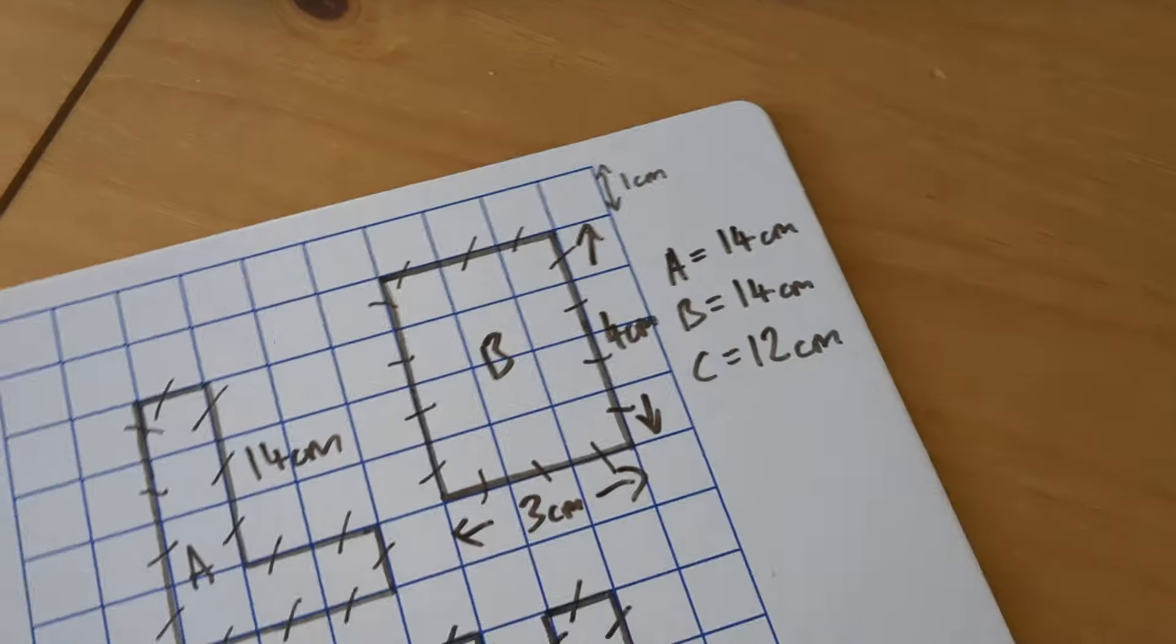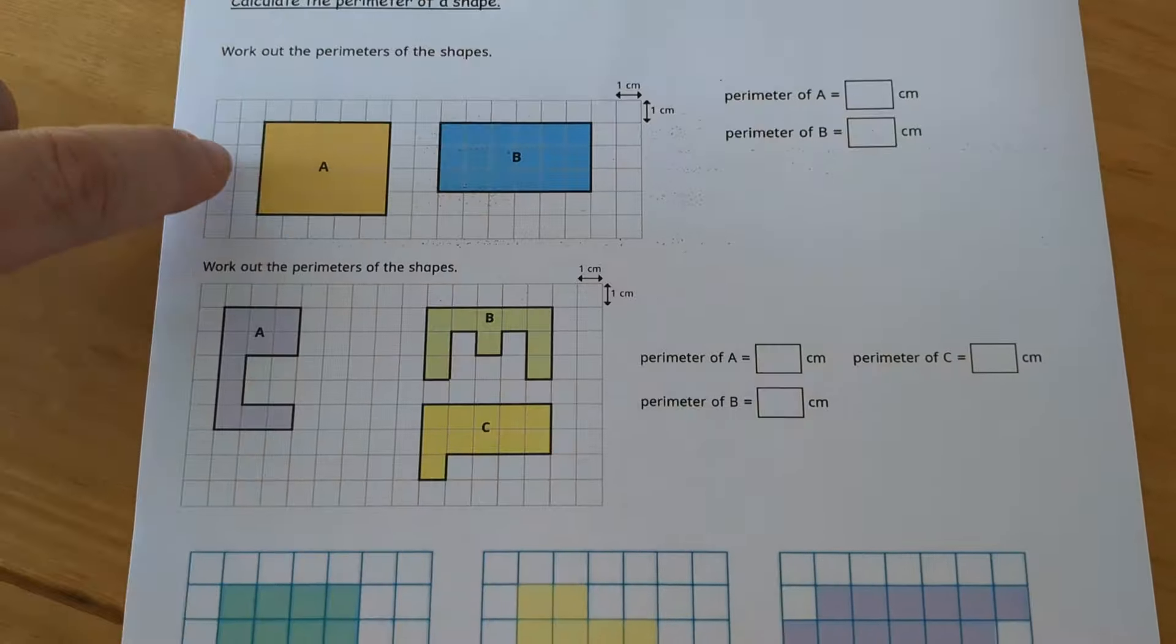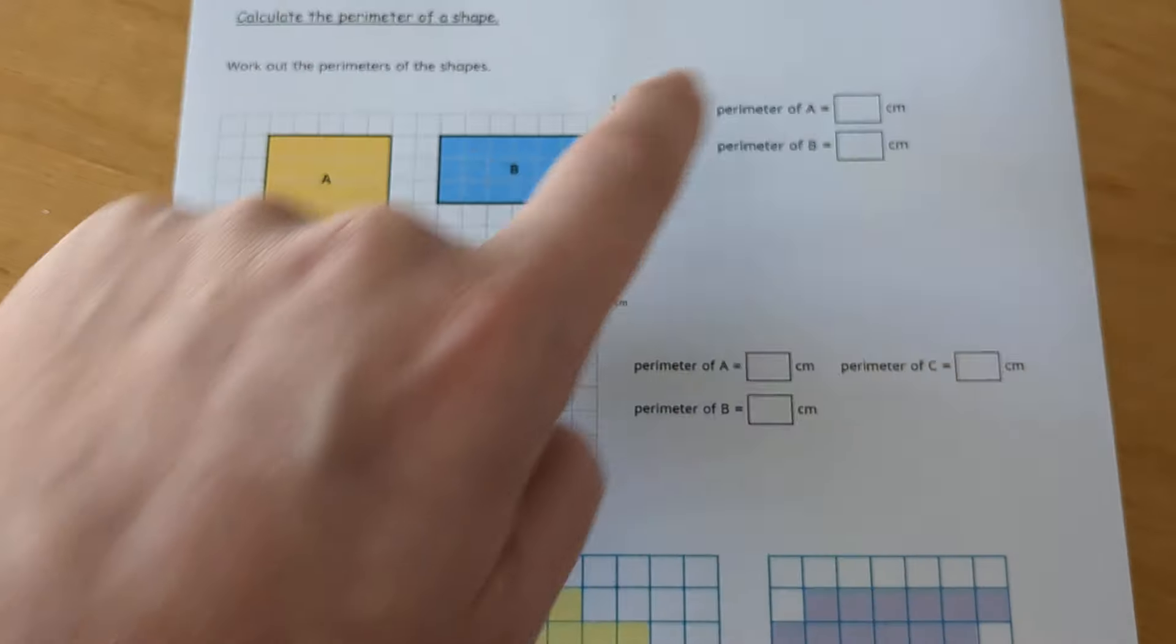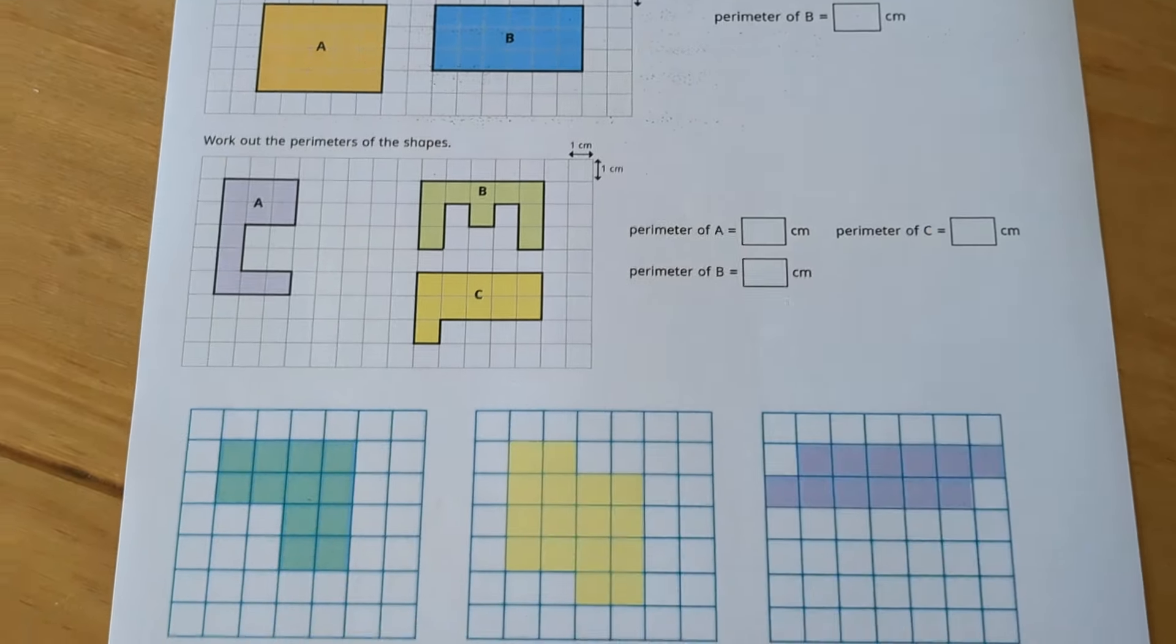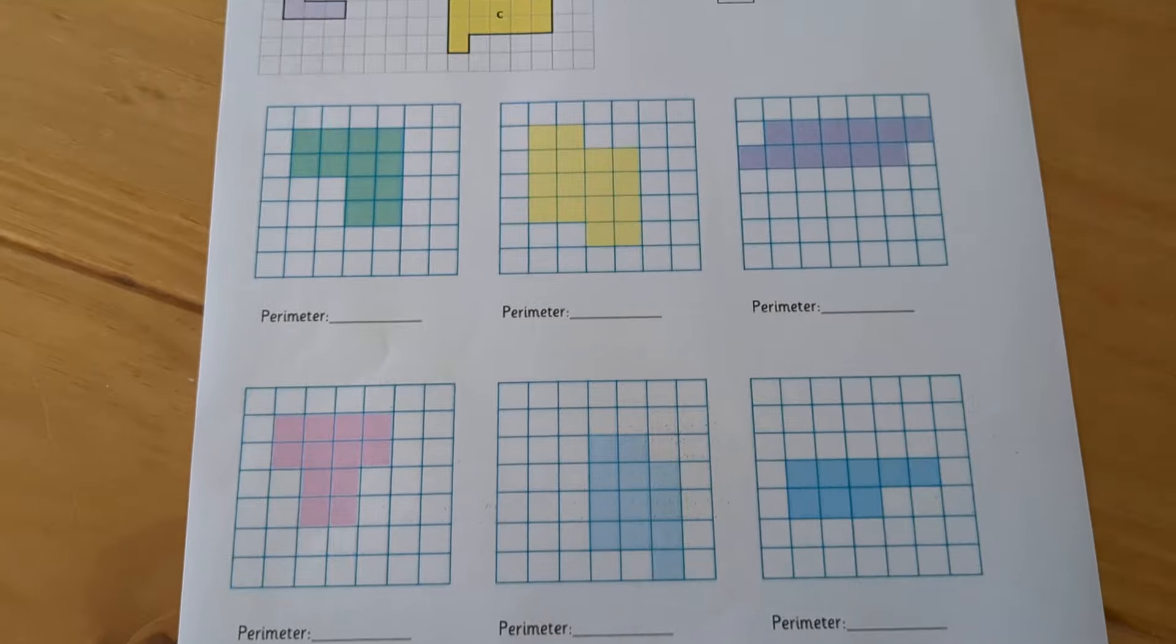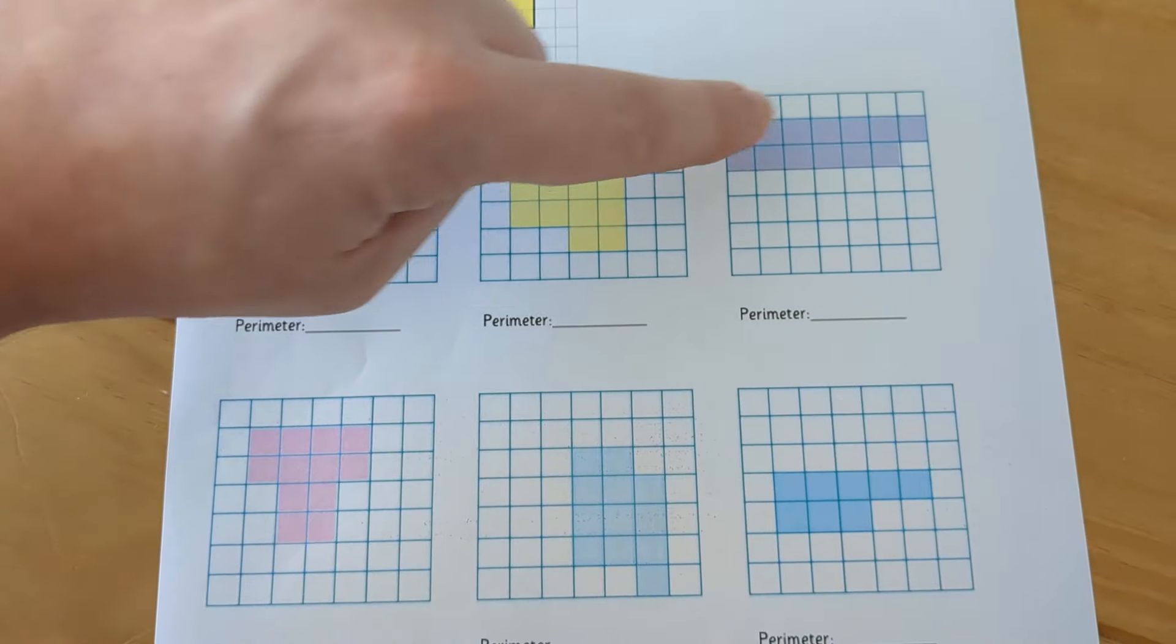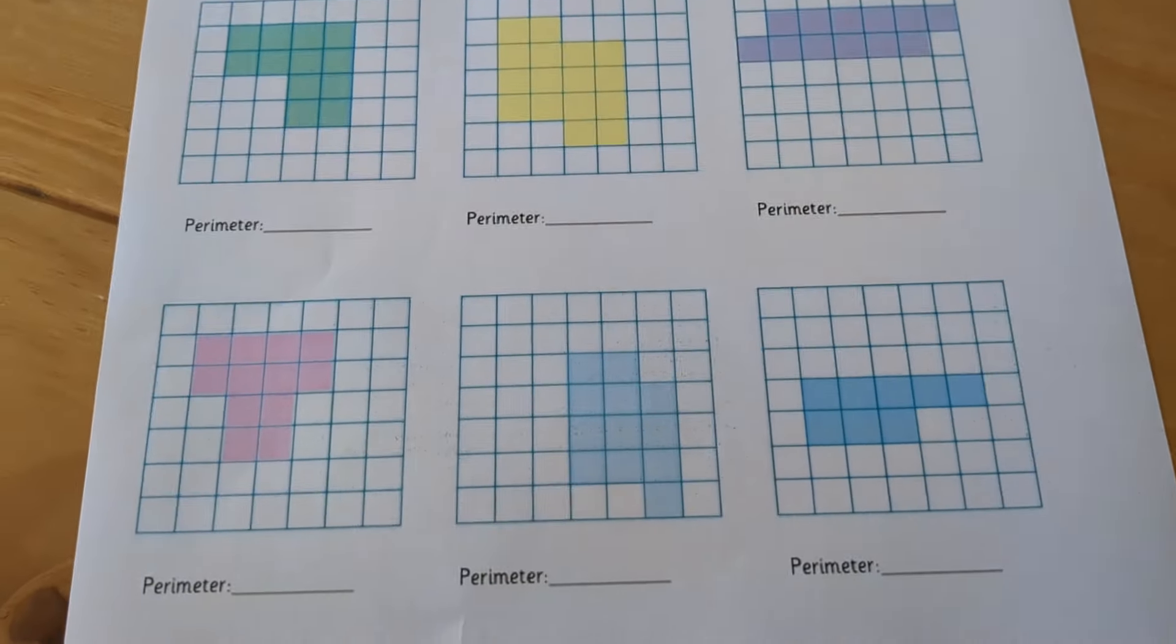So this is the sheet that I have for you. Have a go at this. Work your way around the perimeter, counting those squares to find out what the perimeter is for A and B. Work out A, B, C. And then these ones, exactly the same, but don't be tricked by this. Even though it's right next to the edge, that is still a piece. So there you go. Have a go at working out the perimeter of these shapes.